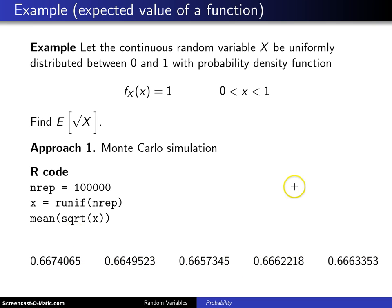Notice that these numbers are all looking a whole lot like two thirds. And so there is some suspicion here that maybe the expected value of the square root of X is equal to two thirds.